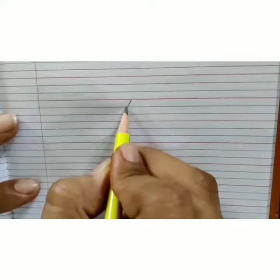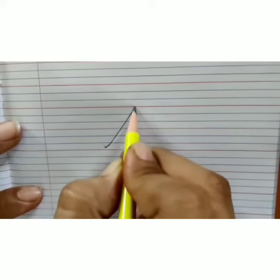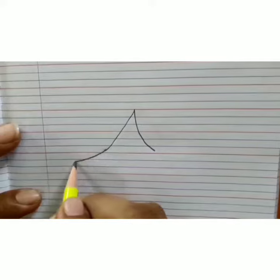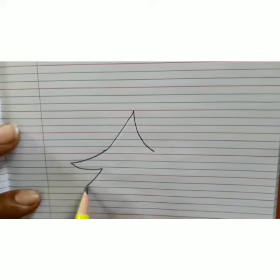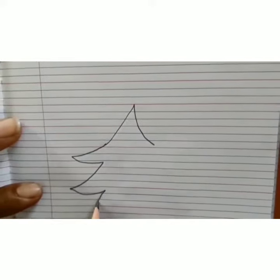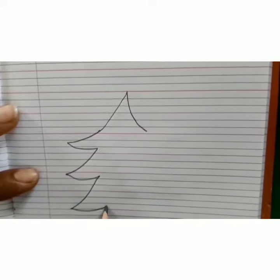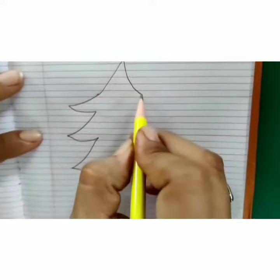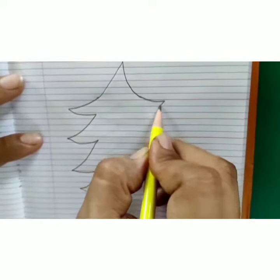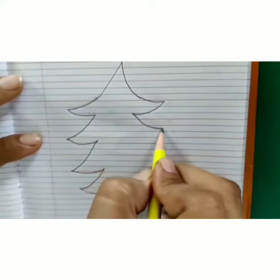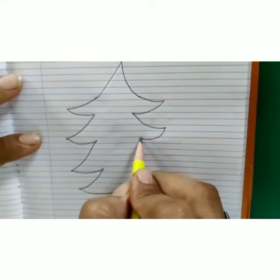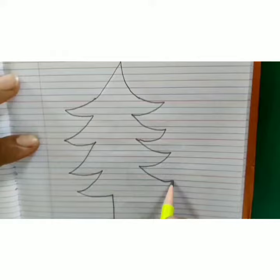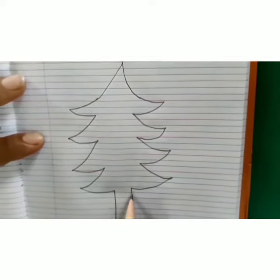Draw a big slanting line. Here also draw one big slanting line. From here draw zig zag lines and standing line. From here also draw zig zag lines and standing line.